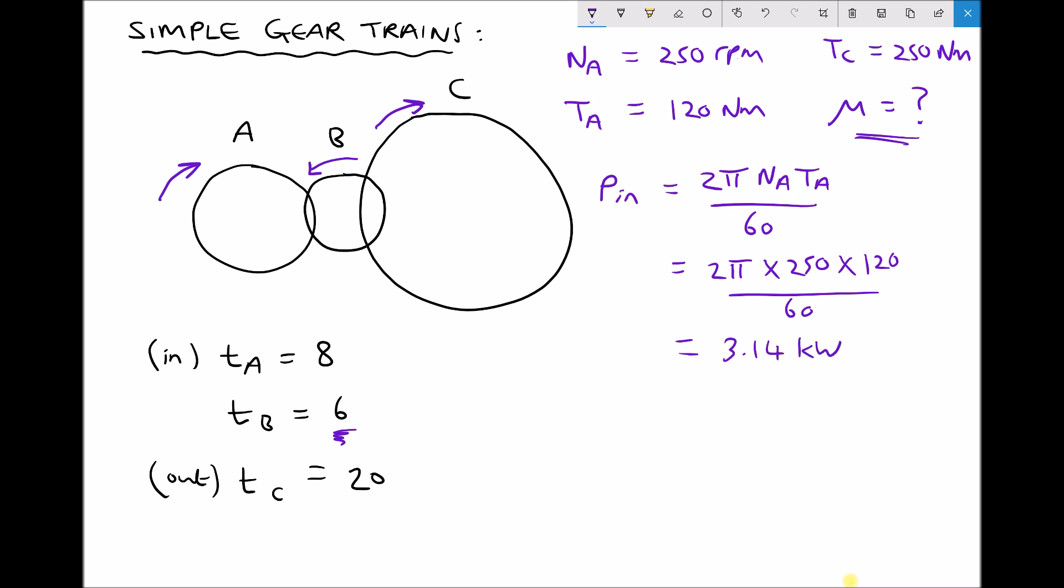Now if we wanted to calculate the output power we would need the output speed and the output torque. But at the moment we don't know the output speed. We can find it. First of all we need to find our gear ratio and then we can find our output speed.